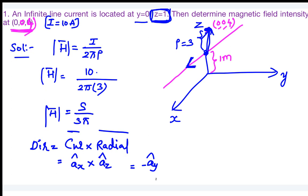So in this question, the radial direction always represents movement from the source to the observer. Moving from source to observer, we move in the z direction — that is the radial direction. The current flows in the x direction, so the magnetic field lies in the negative y direction.